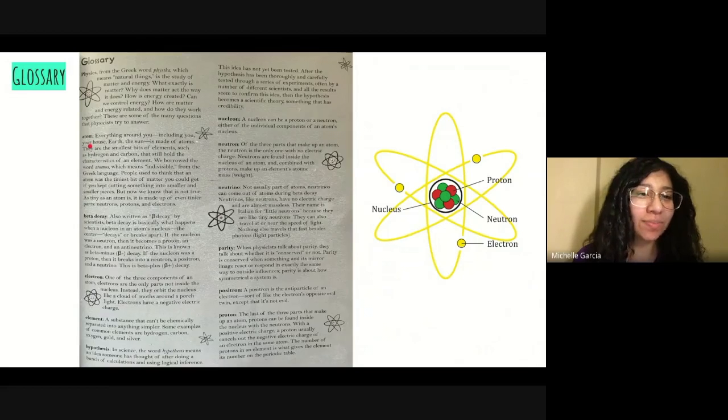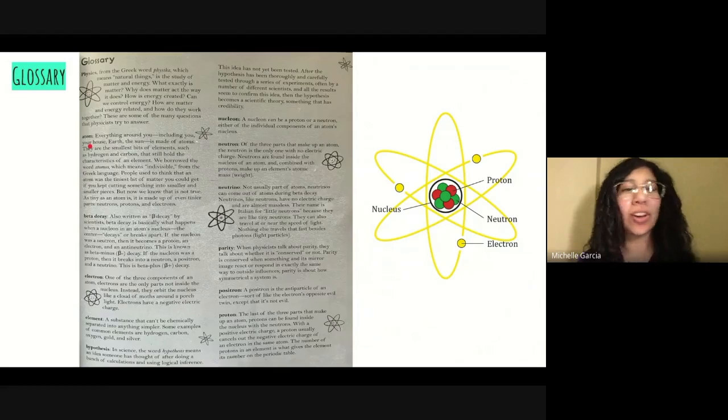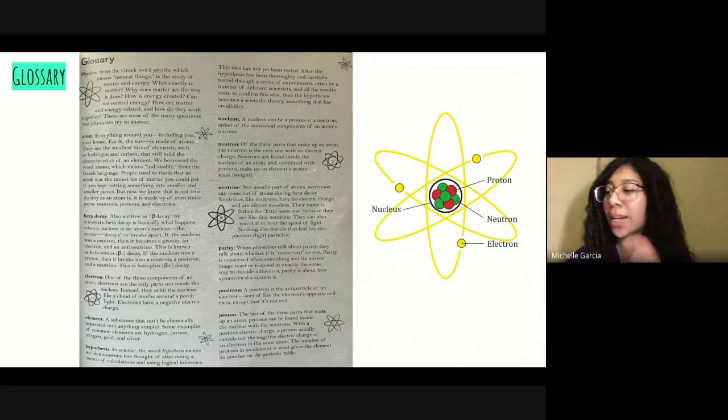Now on to atom. Everything around you, including you, your house, earth, the sun, is made of atoms. They are the smallest bits of elements, such as hydrogen and carbon, that still hold the characteristics of an element. We borrowed the word atomos, which means indivisible from the Greek language. What they mean by indivisible is that something cannot be broken apart into smaller pieces.